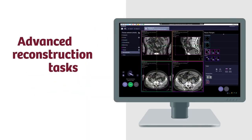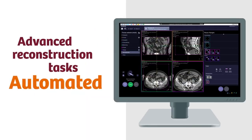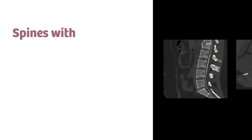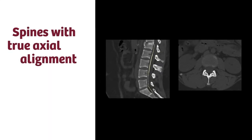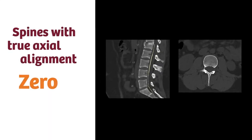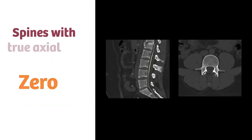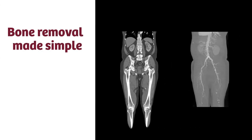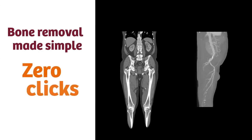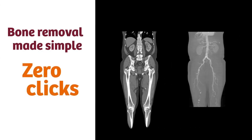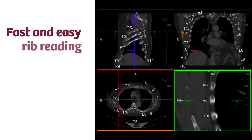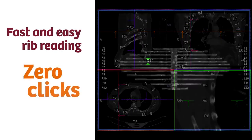Your sophisticated reconstruction tasks can now be automated. PAX-Ready inline spine ranges and labeling — zero clicks. PAX-Ready bone removal — zero clicks. PAX-Ready rib unfolding and labeling — zero clicks.